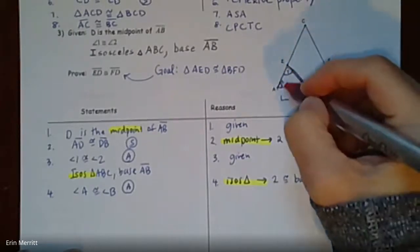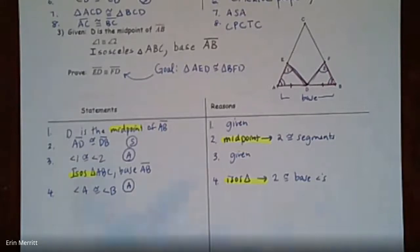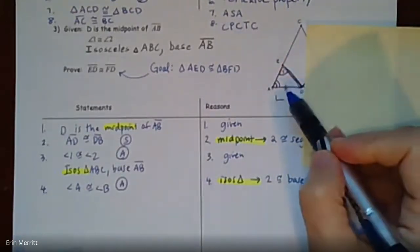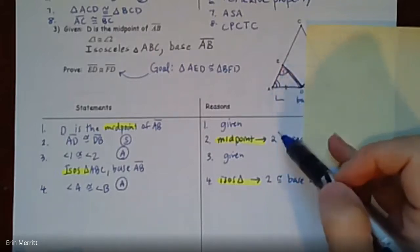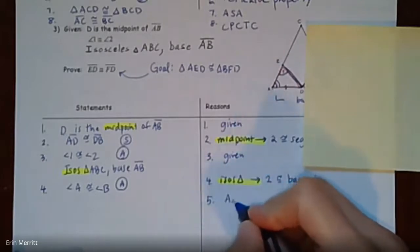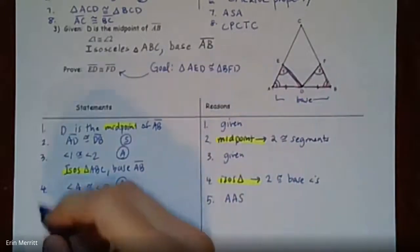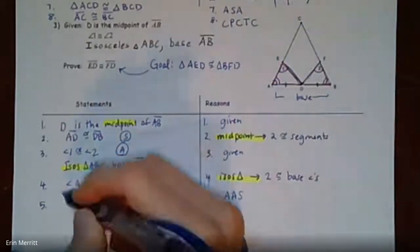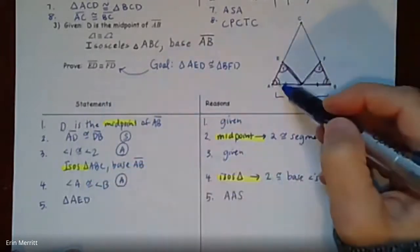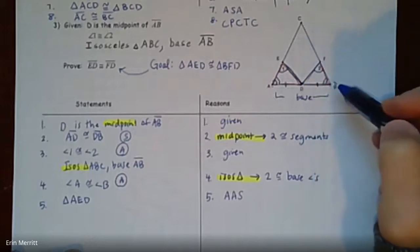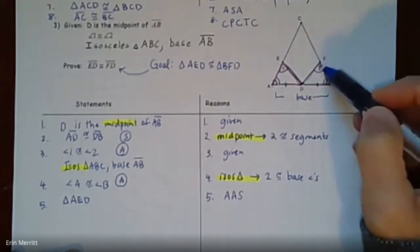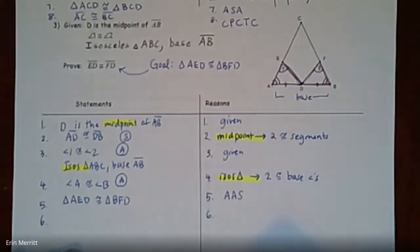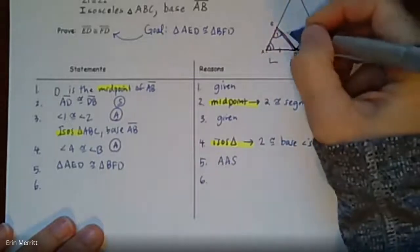Looking at what we have: two angles and a side for each triangle. The side is not between the angles, so this is angle-angle-side. We already have enough for congruent triangles by AAS. Double-check the letter order: triangle AED goes from the two-stripe angle to the one-stripe angle to nothing, and triangle BFD does the same — two stripes, one stripe, nothing. So triangle AED is congruent to triangle BFD by AAS.